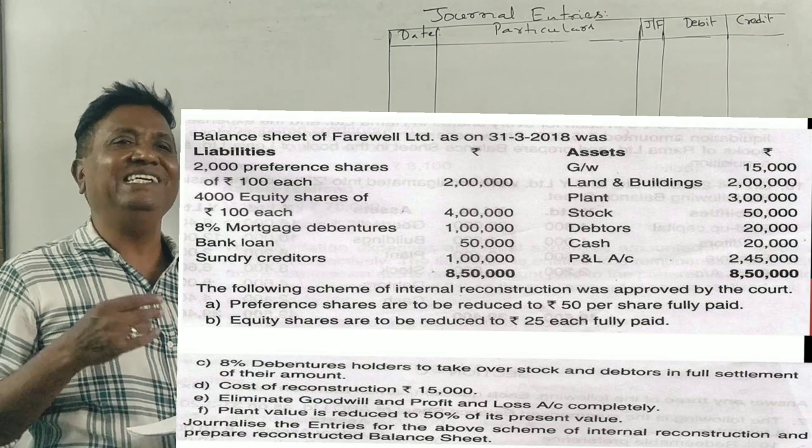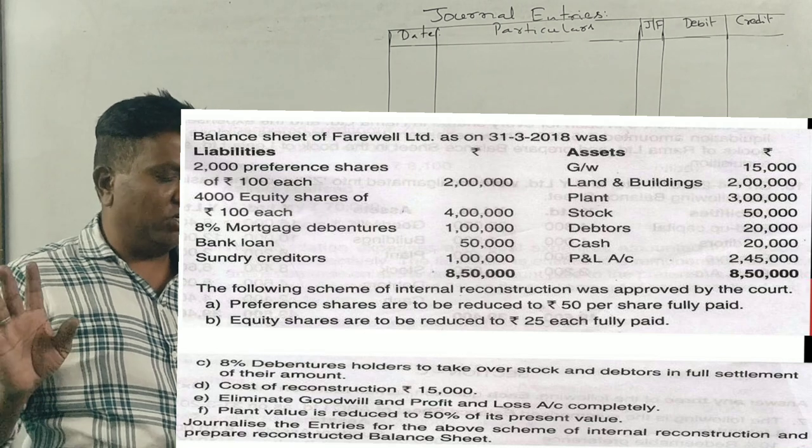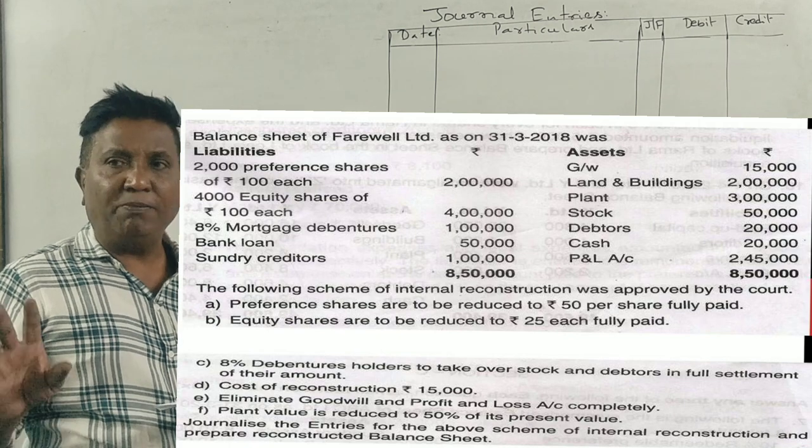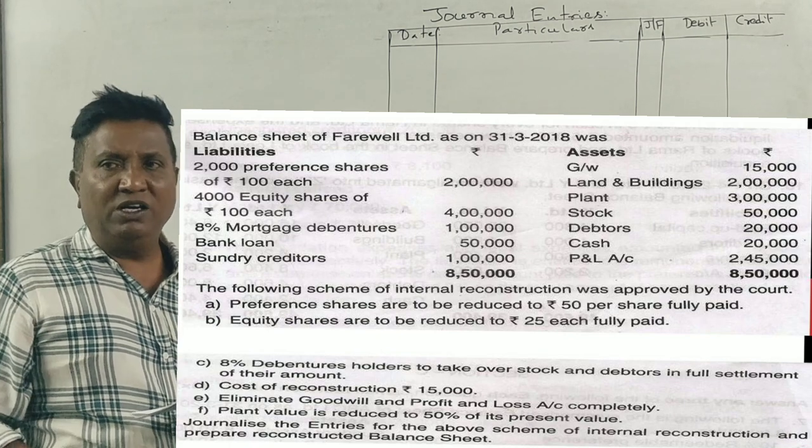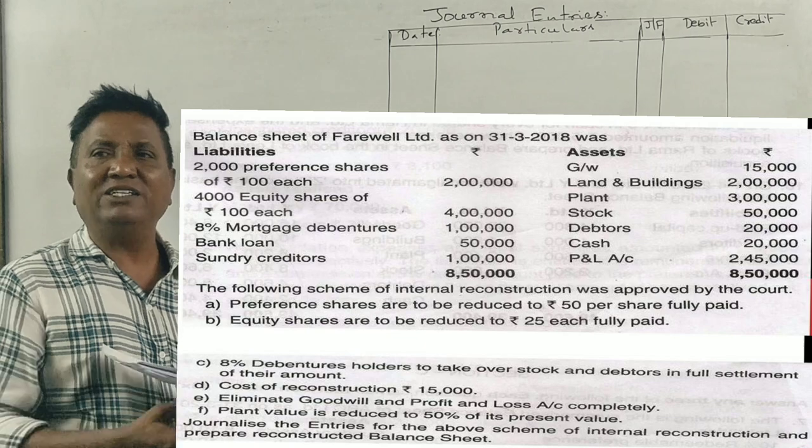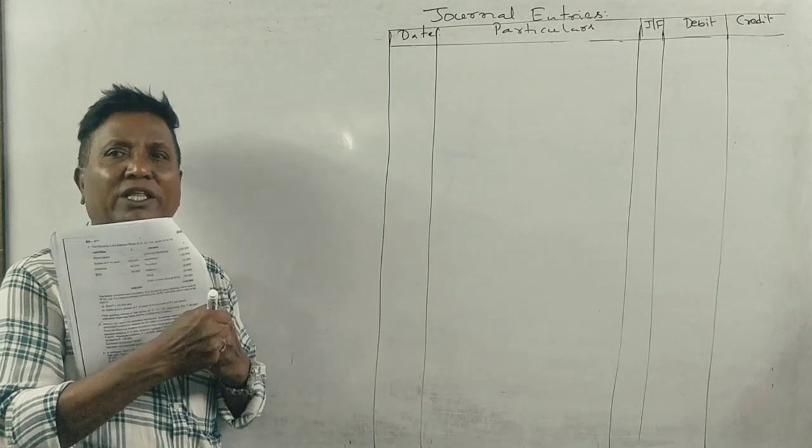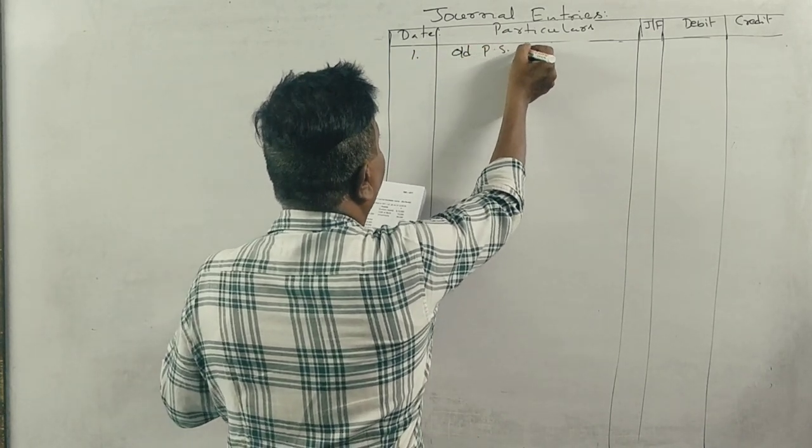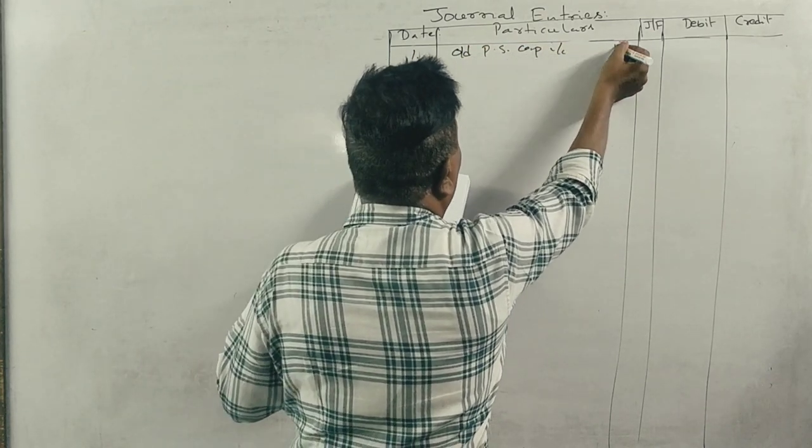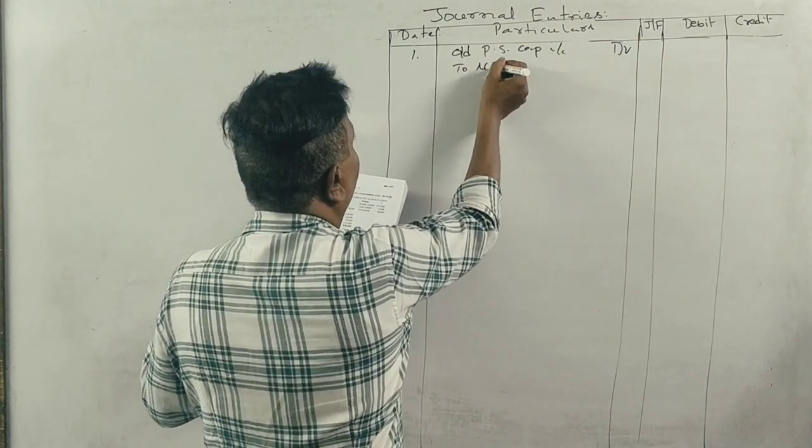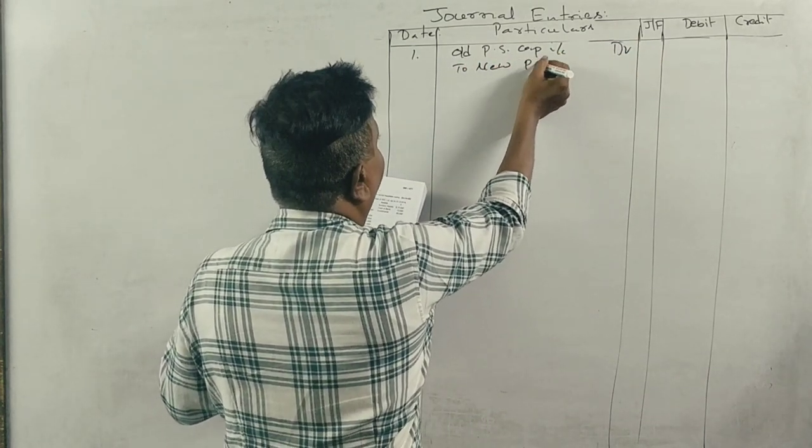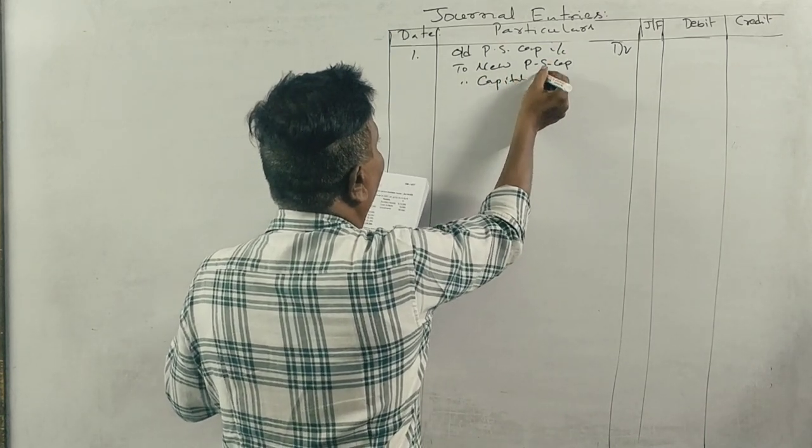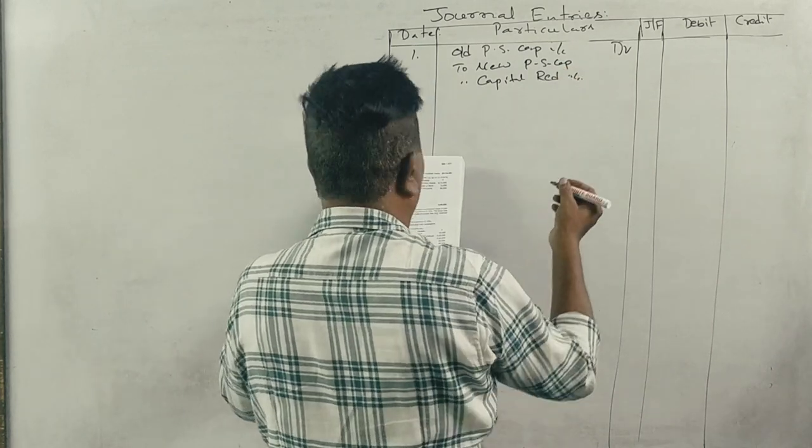The first adjustment: preference shares are to be reduced to 50% of face value. So the entry is: old preference share capital account debit to new preference share capital, to capital reduction account.